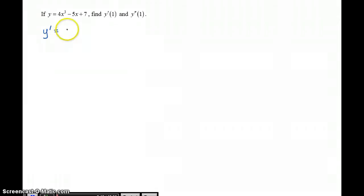We're going to use the power rule here. So 4x cubed now becomes 12x squared when you take the derivative, negative 5x has a derivative that is negative 5, and the derivative of 7 is 0.